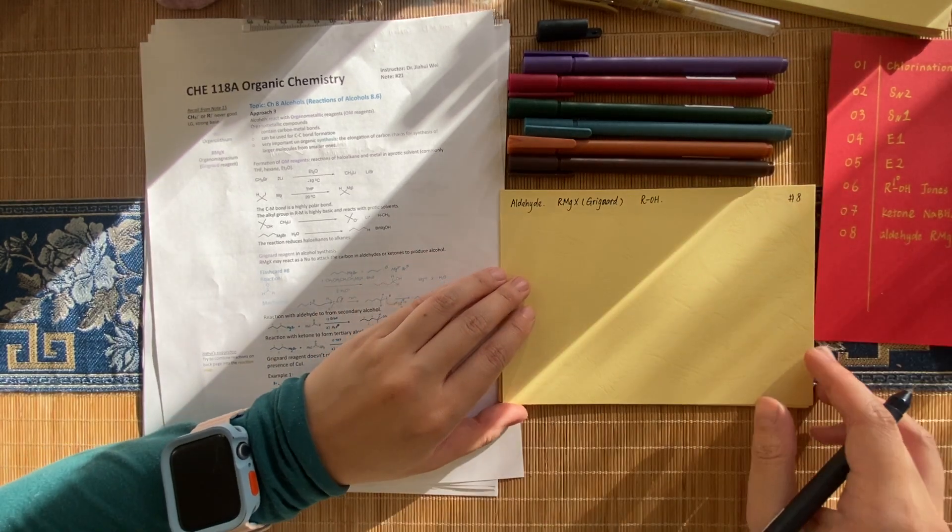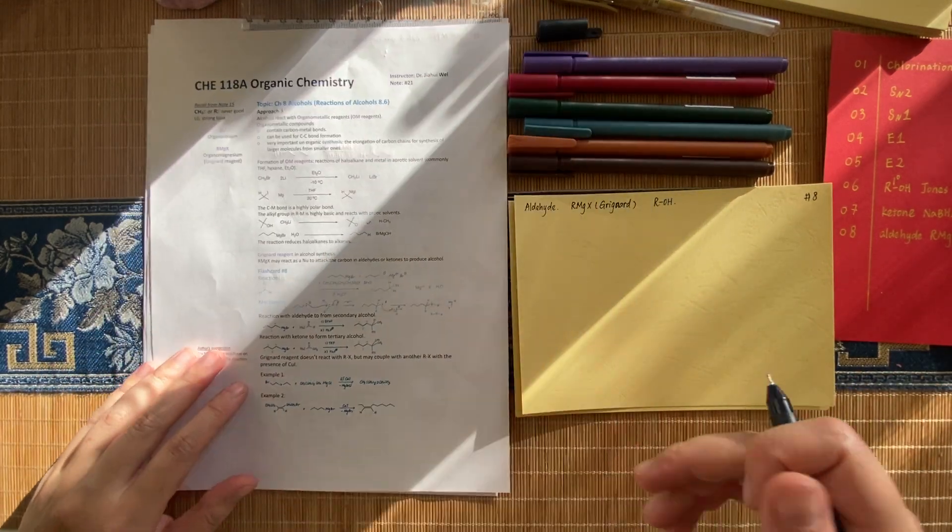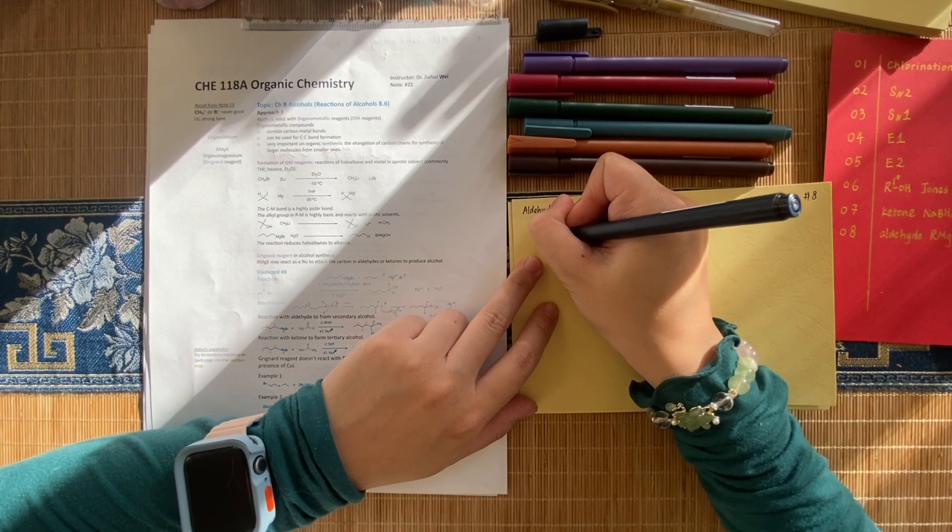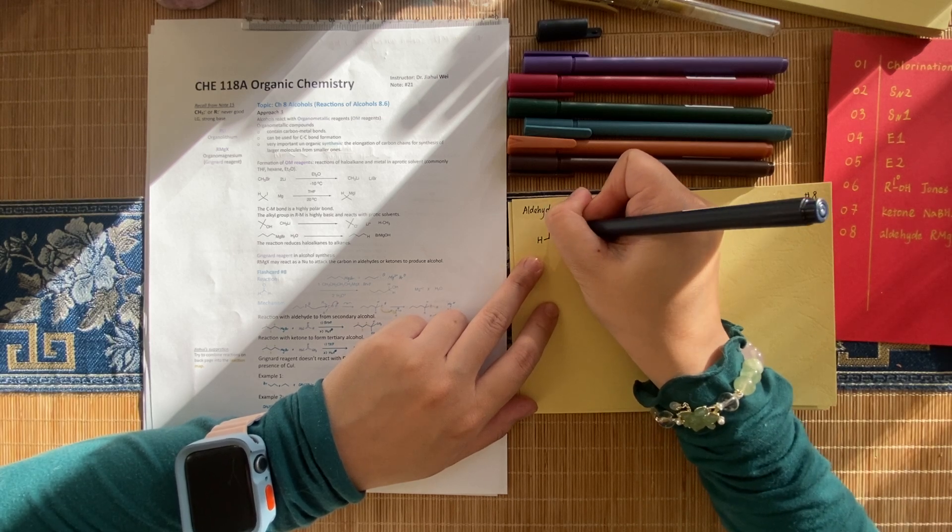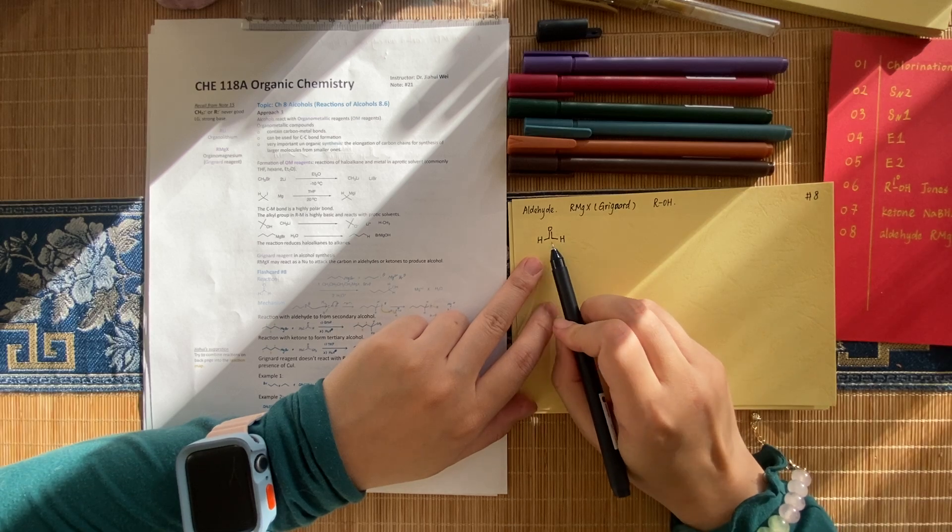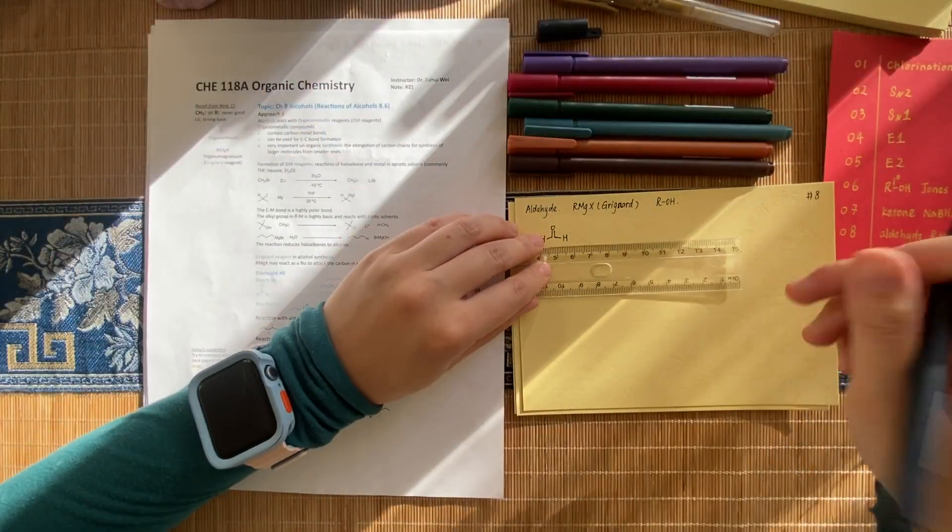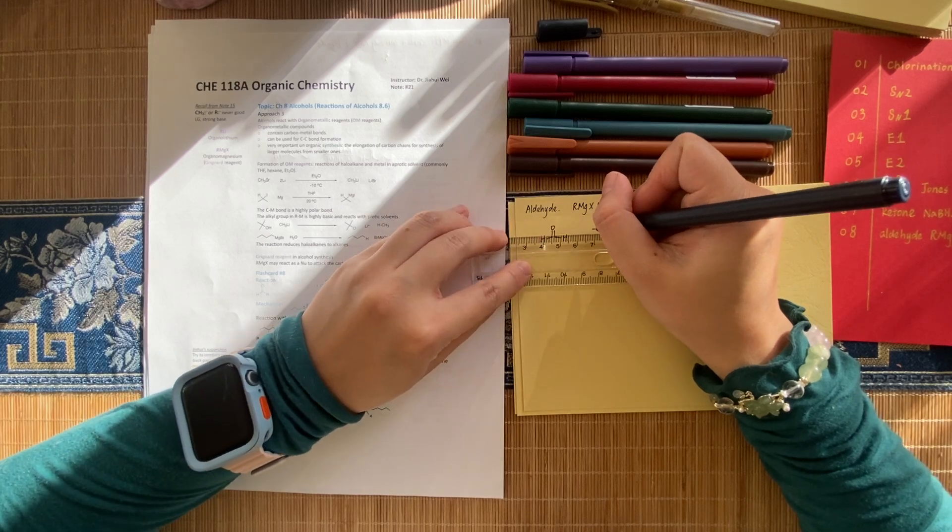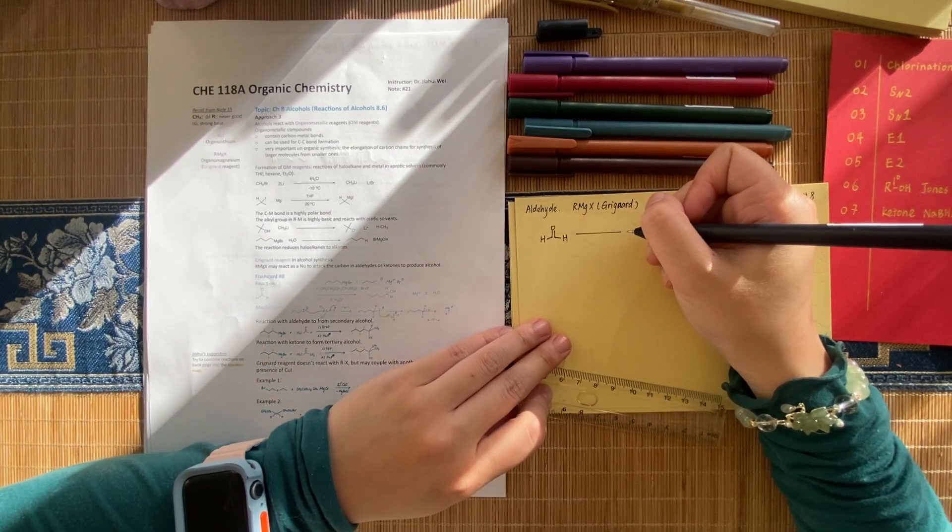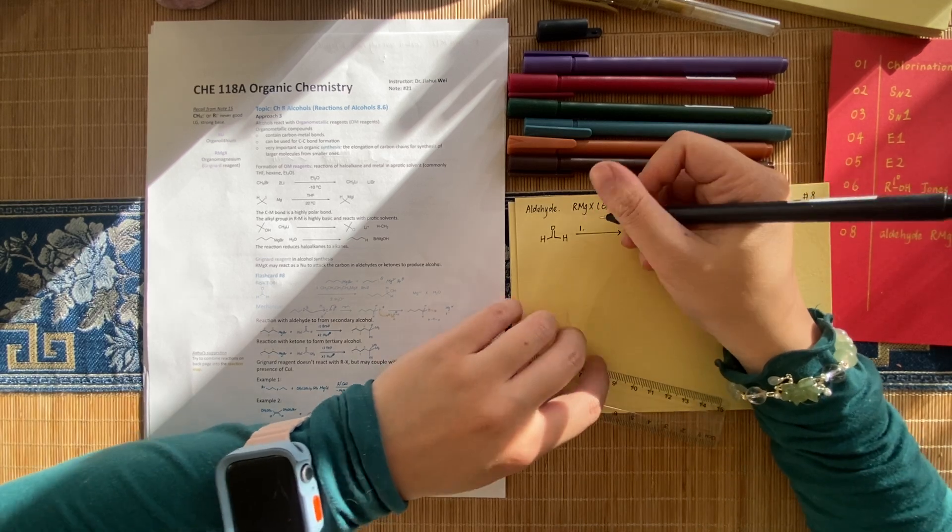And this one is number eight. But we're going to do the primary alcohol first, which is exactly the same. We'll do the secondary alcohol. So this is formaldehyde. This specific aldehyde with both hydrogen on the side is a special aldehyde. It's formaldehyde.